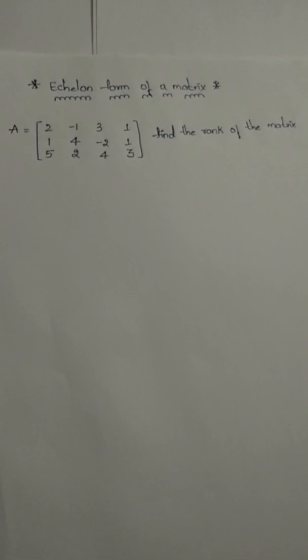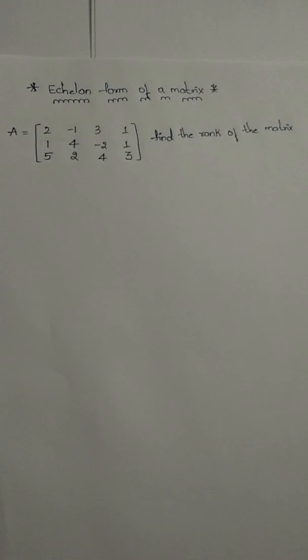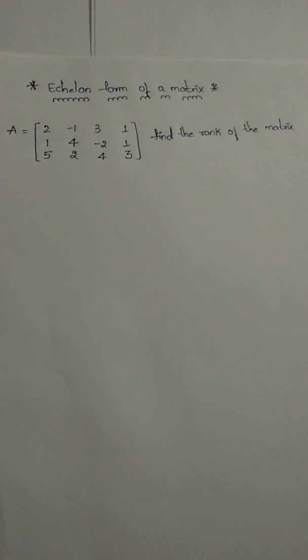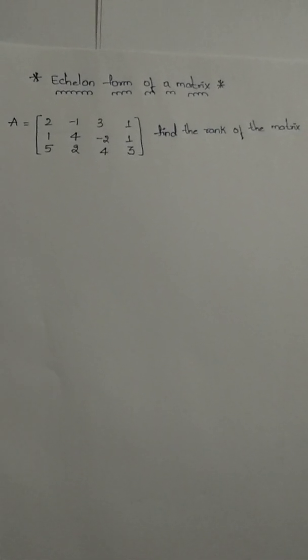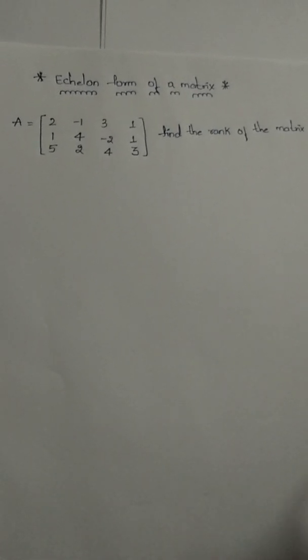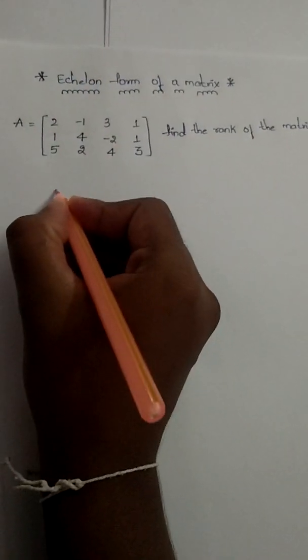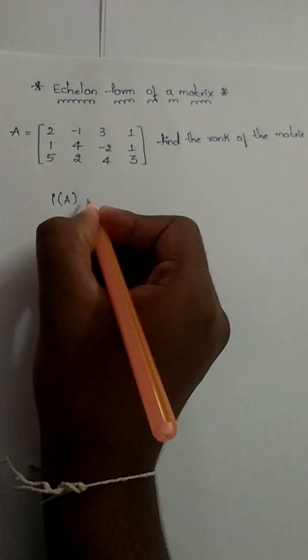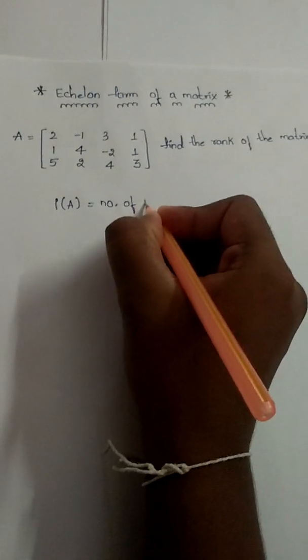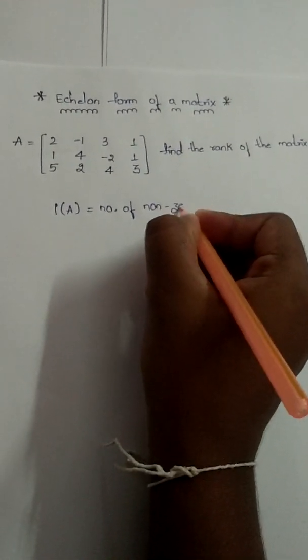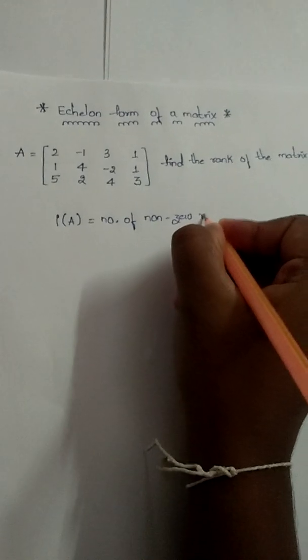Today our topic is to find the echelon form of a matrix. It is used to find the rank of the matrix by reducing it to echelon form. The condition to find the rank of the matrix is: rank of A equals the number of non-zero rows.